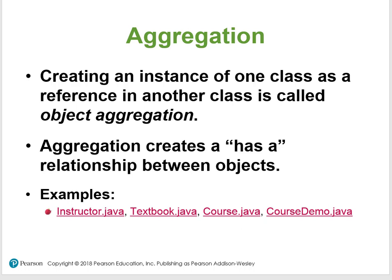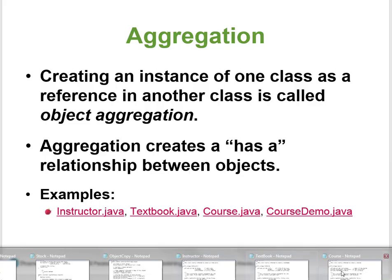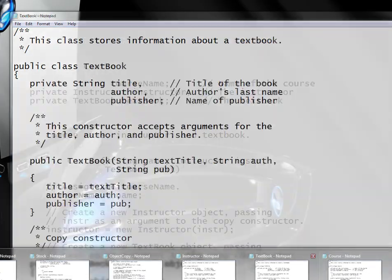Think of that UML we talked about, and inside that field there's another UML — a nested UML. Aggregation creates what's called a 'has-a' relationship between objects. Let me pause here and take a look at the first example in your book, called Instructor.java.